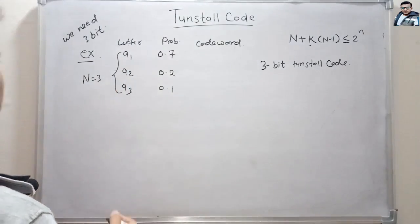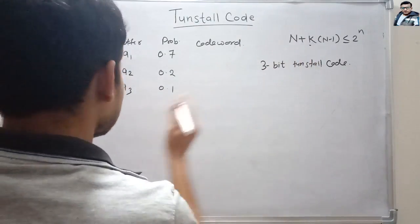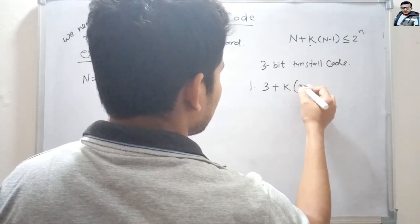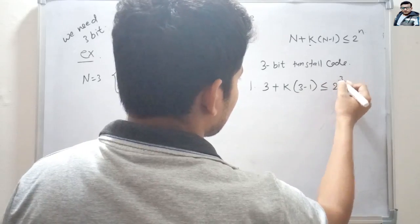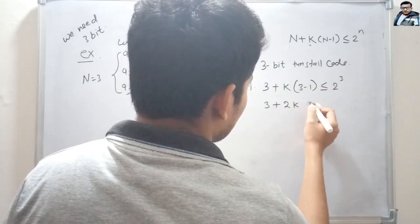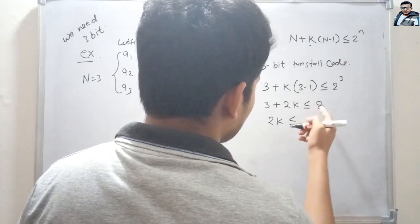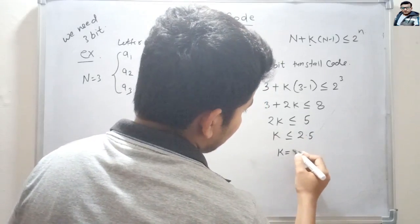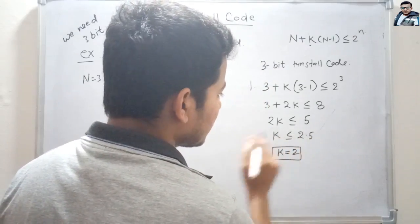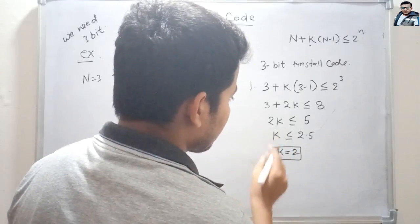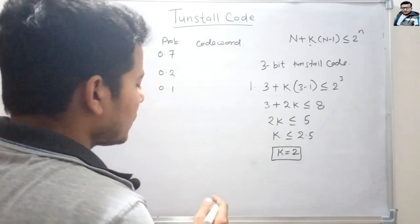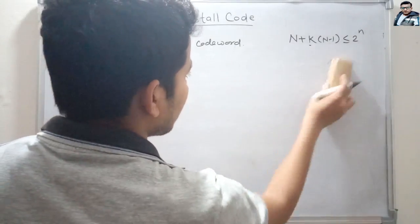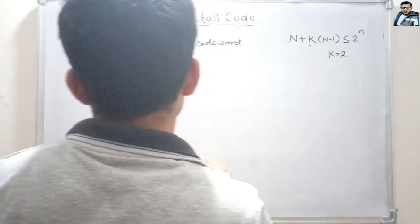The first step is to find the value of k. Substituting: 3 plus k times (3 minus 1) is less than or equal to 2 to the power 3, which gives 3 plus 2k is less than or equal to 8, so 2k is less than or equal to 5, meaning k is less than or equal to 2.5. Therefore k equals 2, and we need to iterate 2 times to find the Tunstall code.